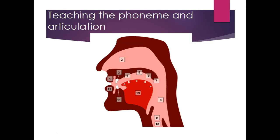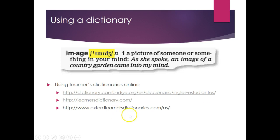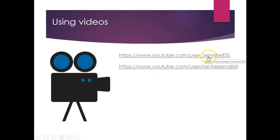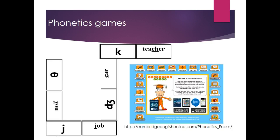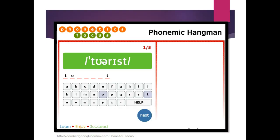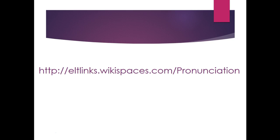You can teach the phoneme and its articulation — where the phoneme is produced, where the tongue is, where the teeth are, how the air should blow. Using a dictionary is also helpful — learners' dictionaries have phonemic transcription and audio so students can learn how to pronounce words. For videos, I recommend Jennifer ESL and Rachel's English — very good YouTube channels with lots of accent reduction and pronunciation exercises. For phonetic games, Cambridge English Online Phonetics Focus is a really good website with different games and apps. You can also try Phonemic Hangman and other games like Bingo, or find ideas at ELT links at wikispaces.com/pronunciation.